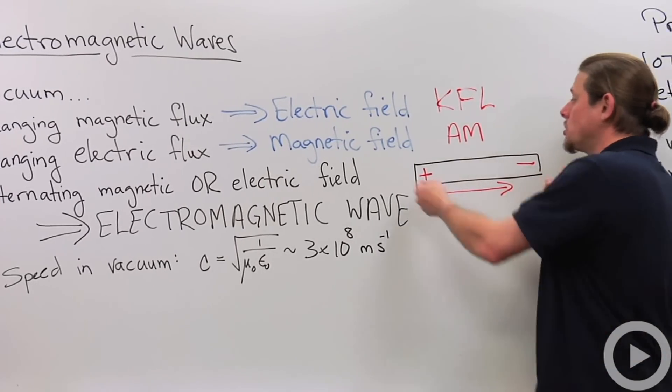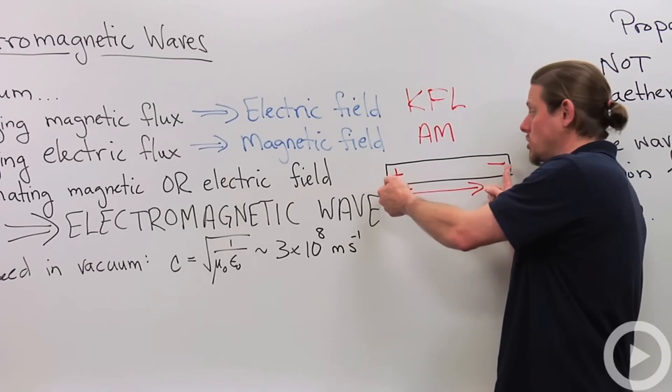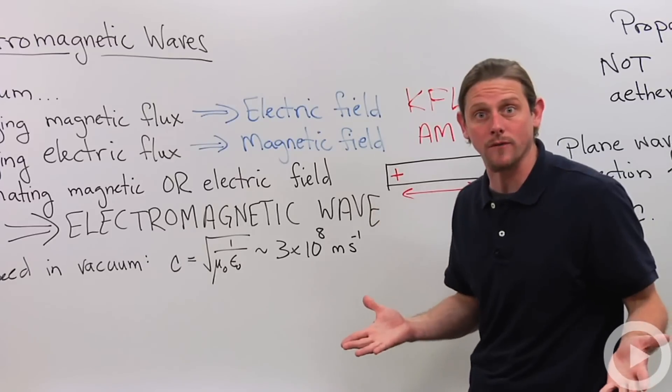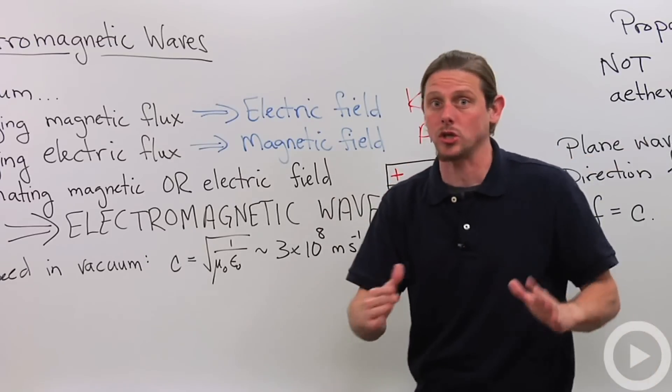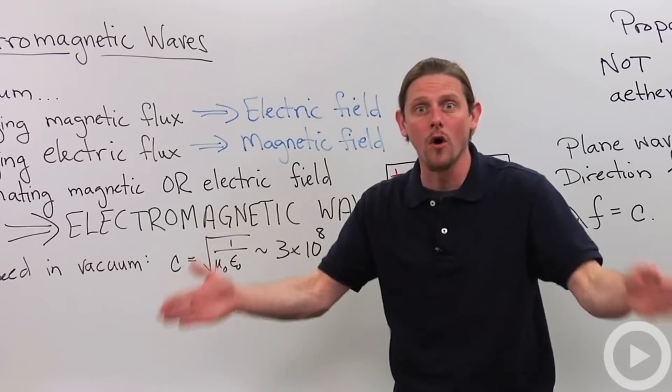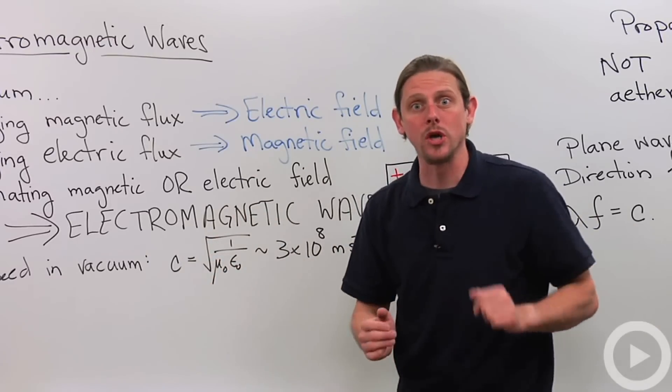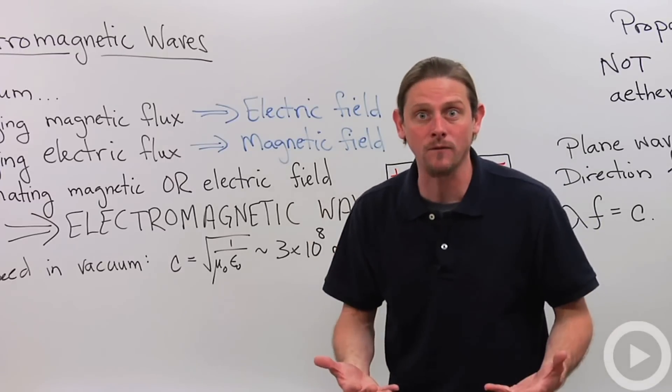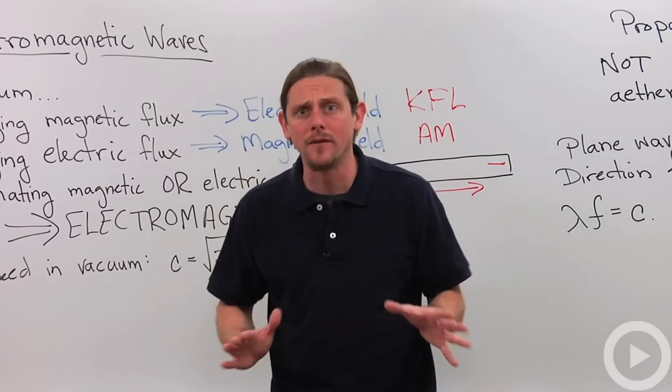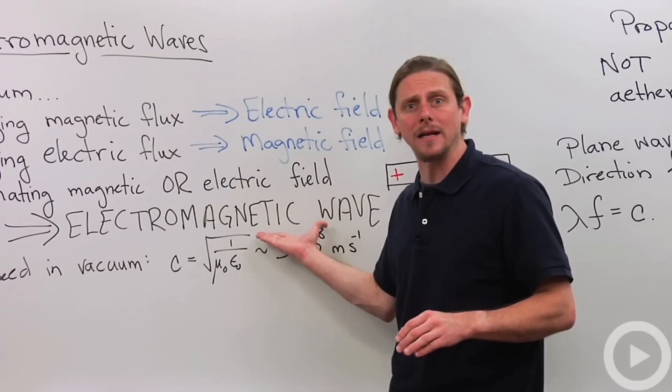We can do that just by having positive and negative charges switch places back and forth. That's going to generate a changing electric field that continues to change. It doesn't just change once. It continues to change over and over and over again and that will generate a changing magnetic field which generates a changing electric field so on and so forth giving us this nice electromagnetic wave.